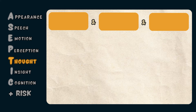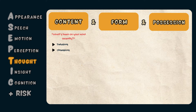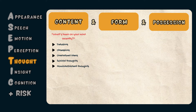The T in ASEPTIC stands for Thought, which can be broken down into thought content, thought form, and thought possession. Thought content refers to the actual substance of the patient's thoughts, assessed by asking 'What's been on your mind recently?' Examples include delusions, which are fixed false beliefs, obsessions, and overvalued ideas. It's also important to assess whether the patient is having any suicidal or homicidal thoughts.